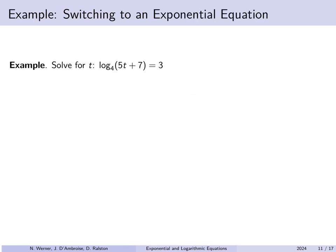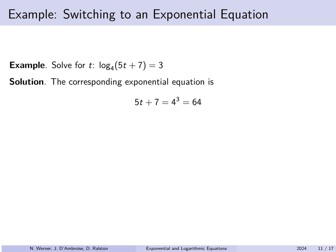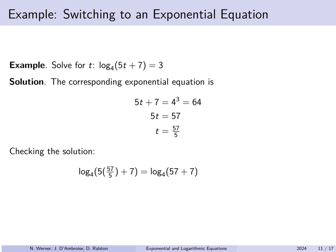Solve for t: log base 4 of (5t+7) = 3. We have a logarithm equal to a constant, so convert to an exponential: 5t + 7 = 4³ = 64. Subtracting 7 gives 5t = 57, and dividing by 5 gives t = 57/5. Checking: plugging 57/5 back in gives log₄(64) = log₄(4³) = 3. Therefore t = 57/5 is the only solution.